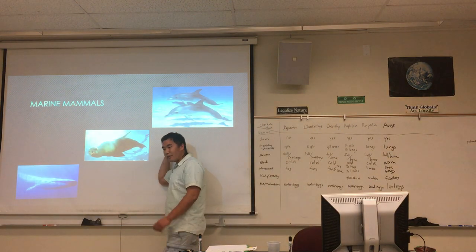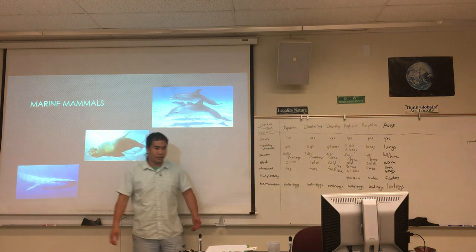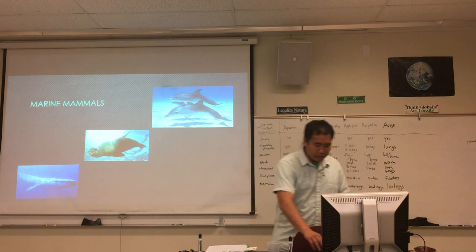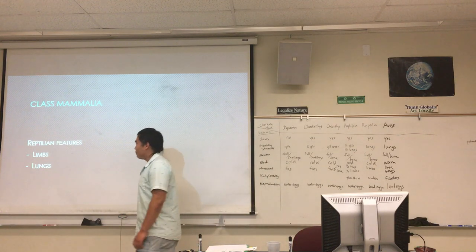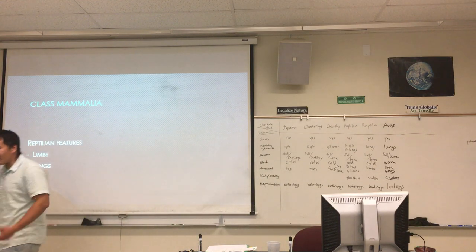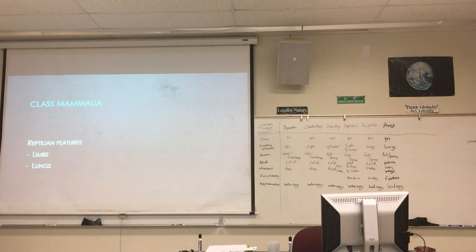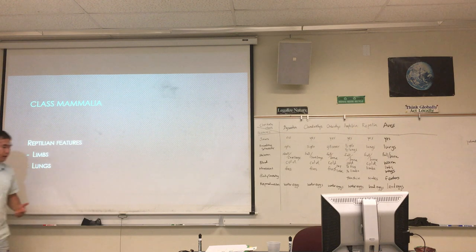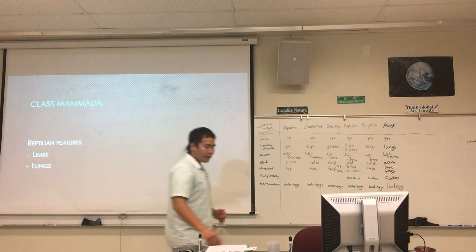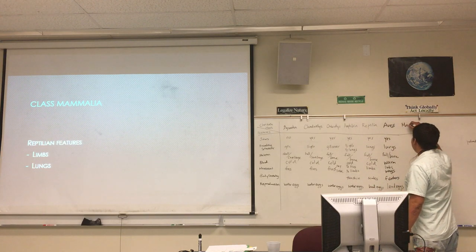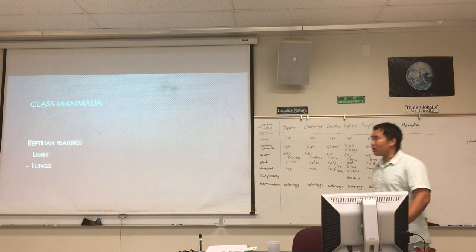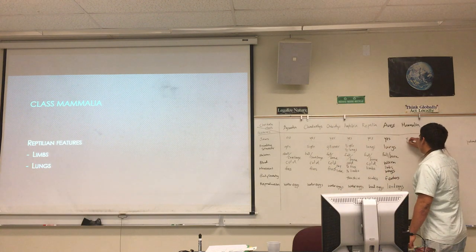Since mammals came from a reptile-like creature, they have old reptilian features: limbs and lungs. Limbs are good for terrestrial life; lungs for breathing on land. But if you want to breathe in the ocean you should have gills, and for movement you should have fins. Let's fill in the table: lungs for breathing, full bone skeleton, limbs for movement.